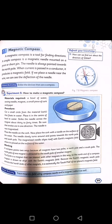Now place the cork with needle on the surface of the water. The needle slowly turns around and points towards the north pole and south pole. The magnetized needle aligns itself with Earth's magnetic field when it is placed on the surface of the water.